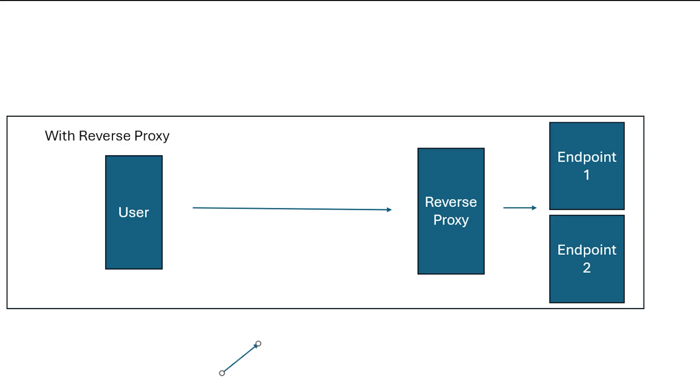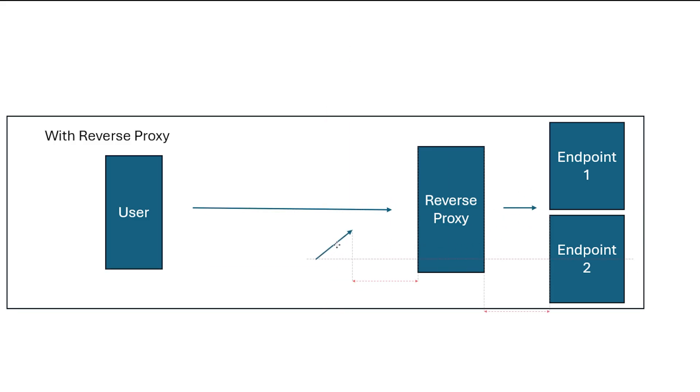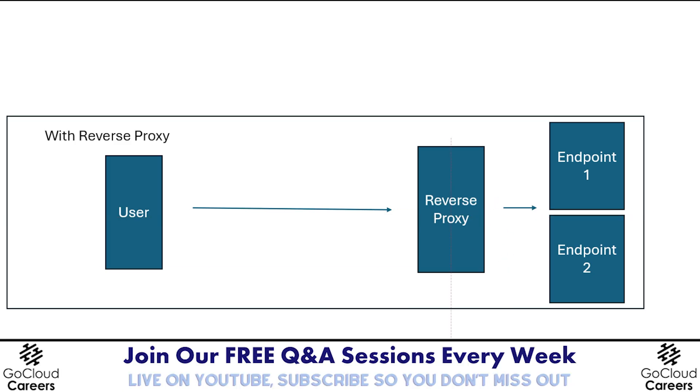That's your forward proxy architecture — it sits between you and the provider. Now let's go to the reverse proxy environment. In a reverse proxy architecture, the proxy is going to be close to the actual cloud providers as opposed to the users. With the reverse proxy, this cloud access security broker is basically close to the users and it's going to intercept and inspect traffic before it reaches the cloud application. You'll often be sent here via a DNS redirect, which pushes you to the reverse proxy, and the reverse proxy will then reach out to the endpoints or cloud providers.